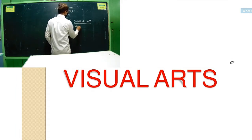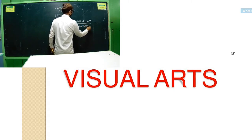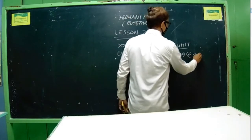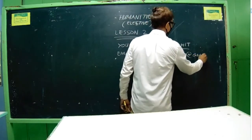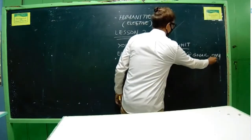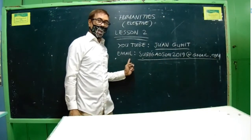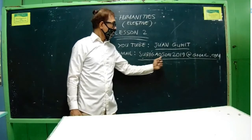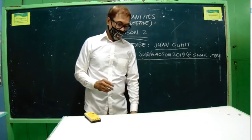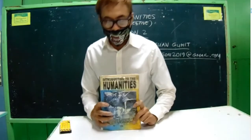After watching the pictures in these slides, I will post some questions for you to answer on a piece of paper. Take a picture with your phone cameras and send the jpg to my email: surigaosan2019 at gmail.com. Here's number one: the scope of humanities.